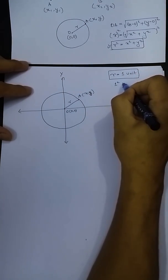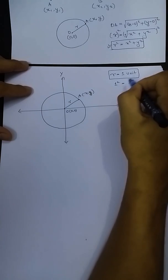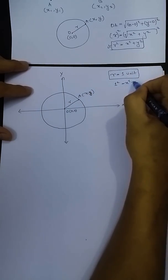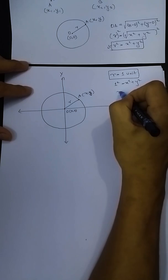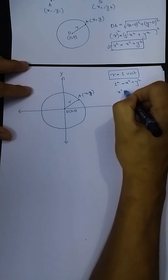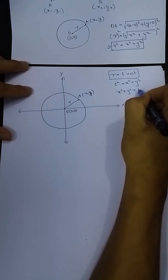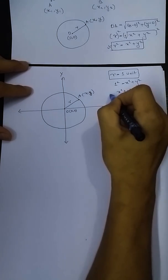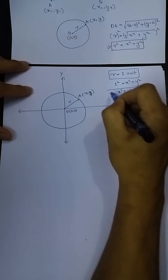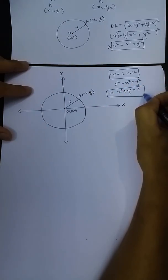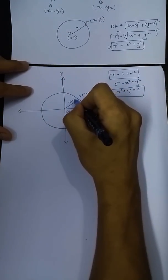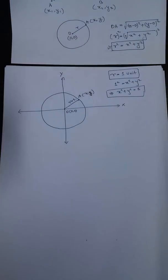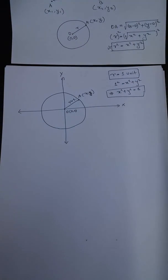One squared: x squared plus y squared equals to 1. The equation of circle is x squared plus y squared equals to 1.